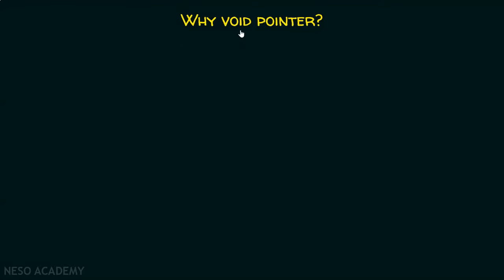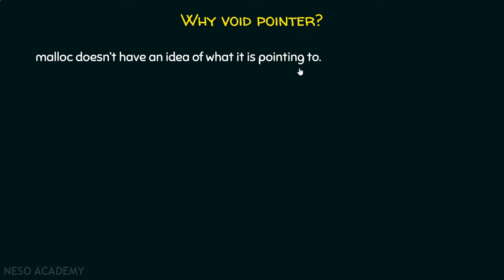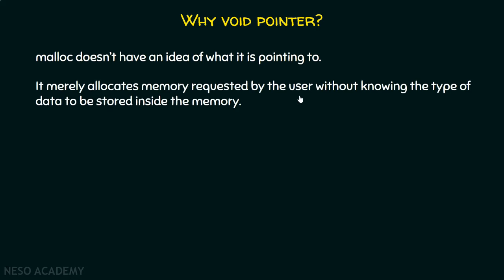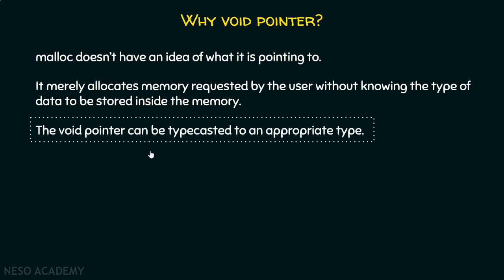Why does malloc return a void pointer? Malloc doesn't have an idea of what it is pointing to. It simply allocates memory for us without knowing what data will be stored in that memory location. It merely allocates memory requested by the user without knowing the type of data to be stored. That is why it returns a void pointer. After allocation, it is our responsibility to typecast it to an appropriate type so that we can use it in our program properly. A void pointer is a pointer which can point to any type of data.